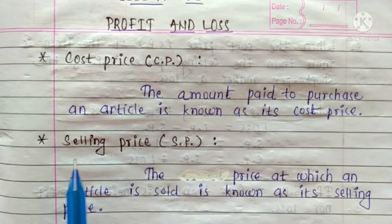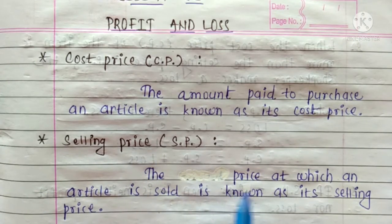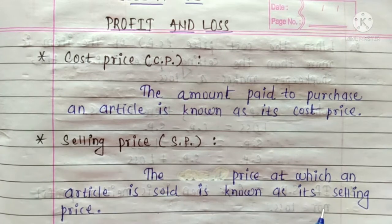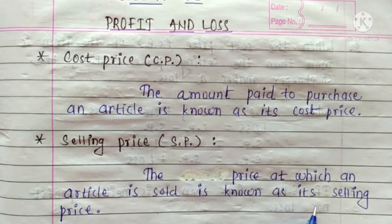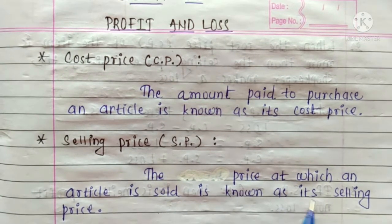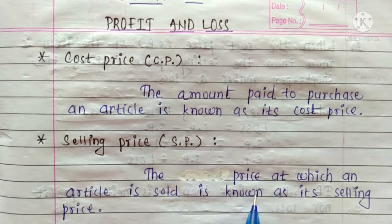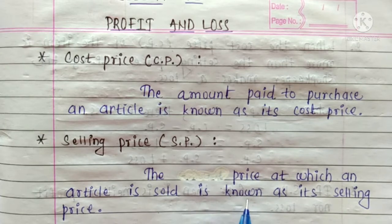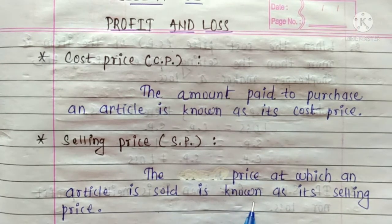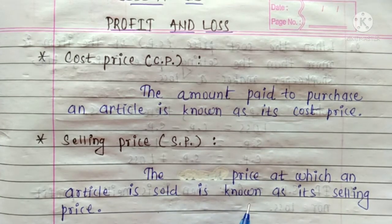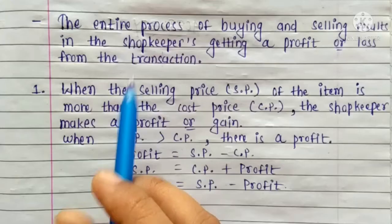Selling Price: The price at which an article is sold is known as its selling price. That means, जिस price पे हमने कोई भी article को sell किया है वो होता है उस article का selling price.